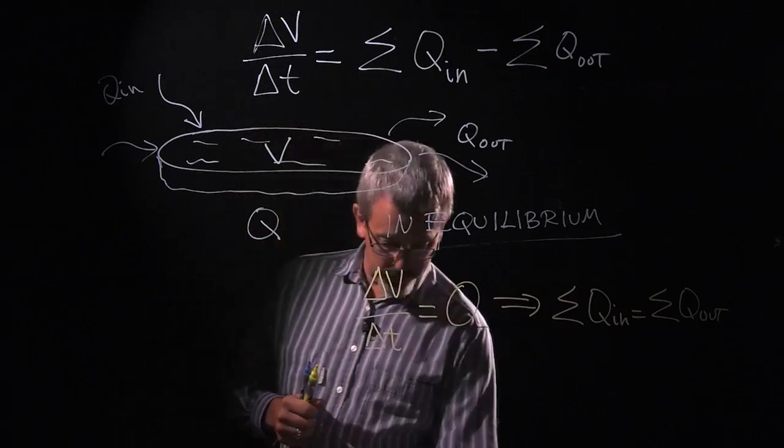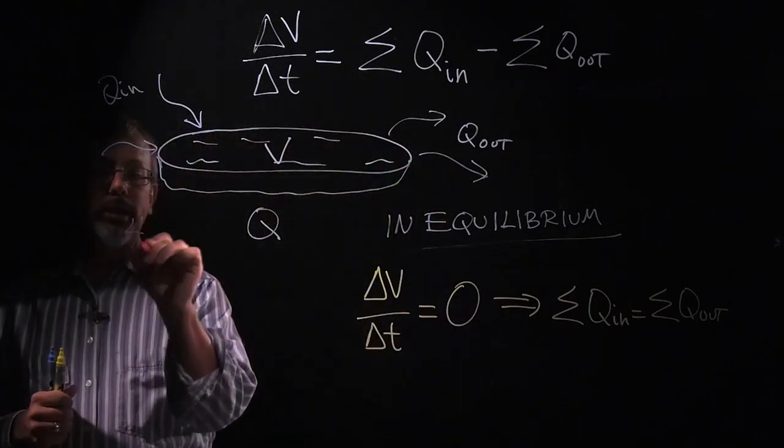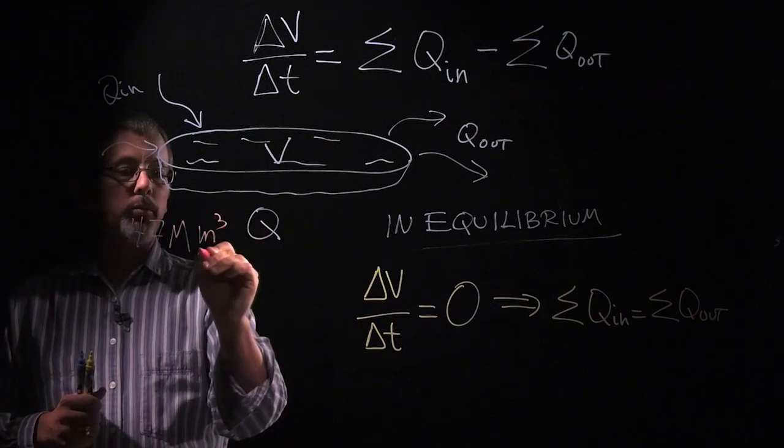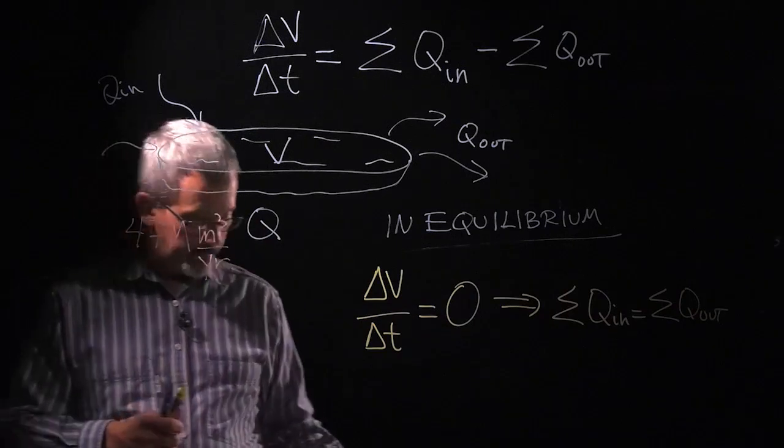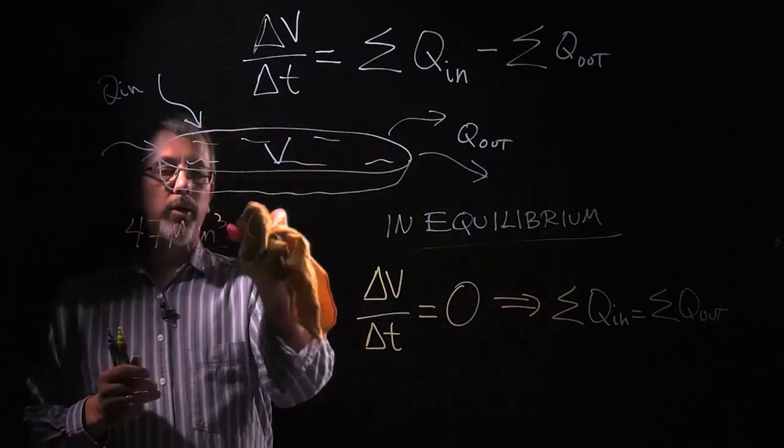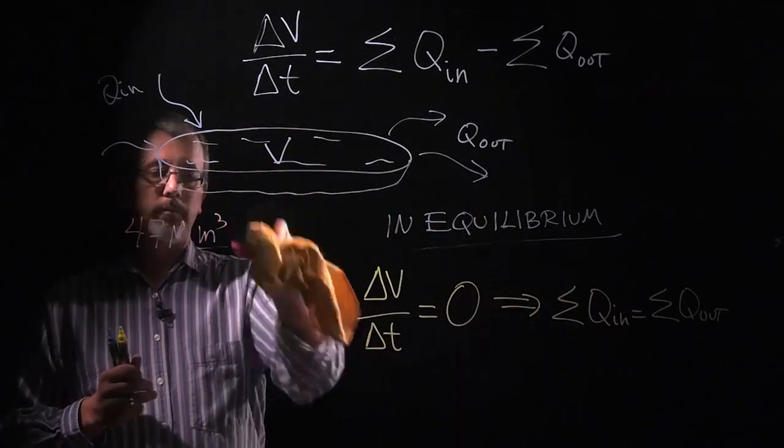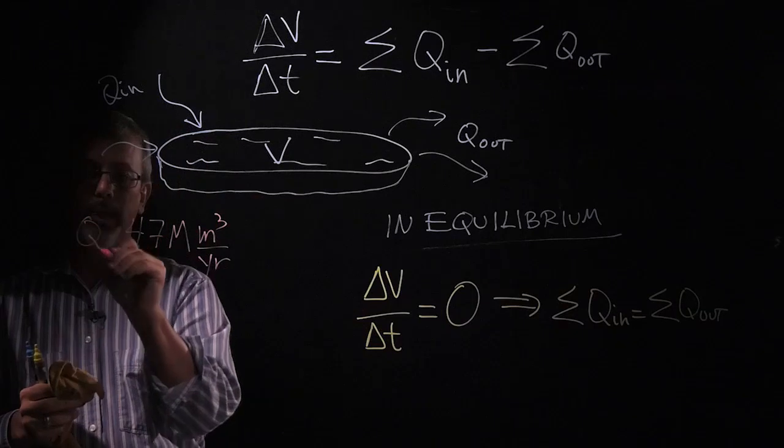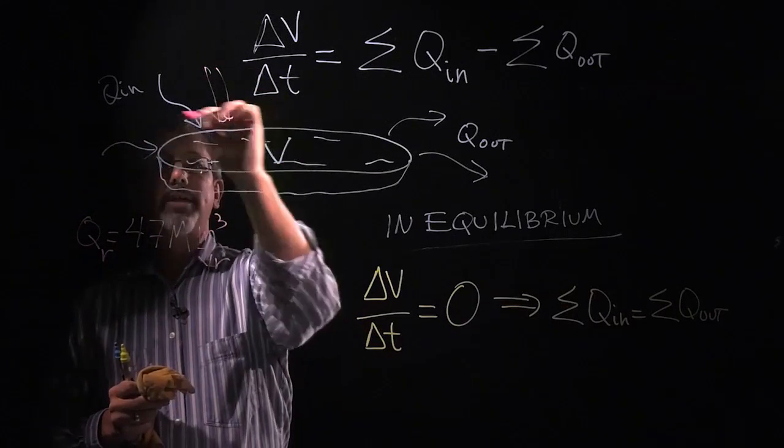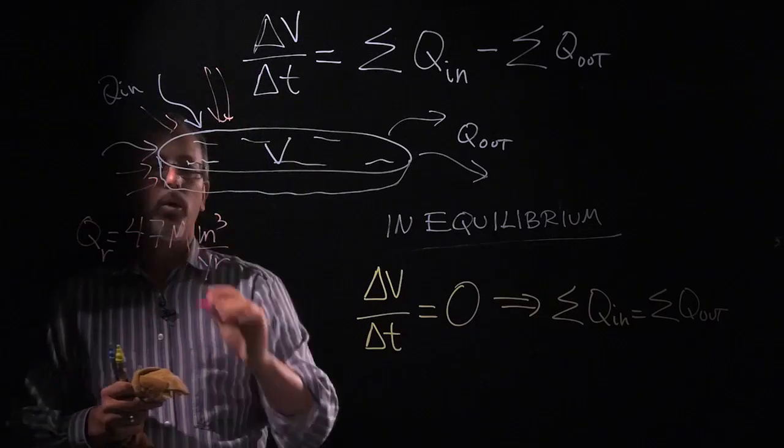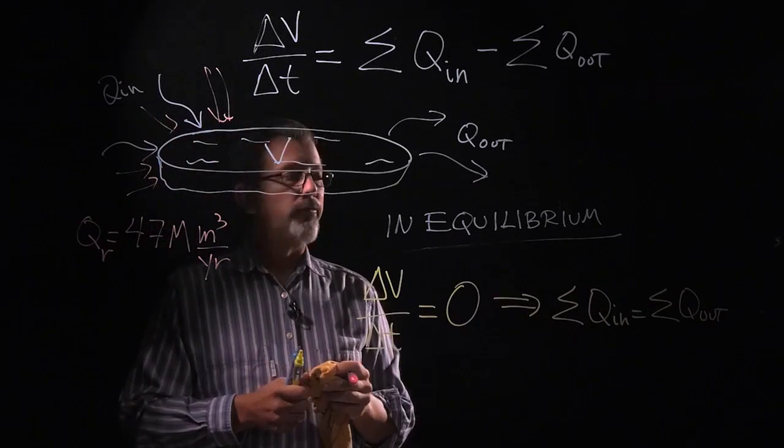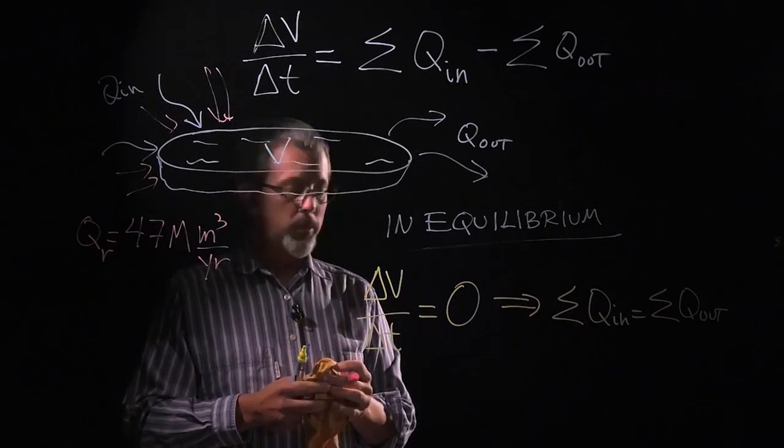Let's say, for example, that the lake receives 47 million meters cubed per year in runoff. I'll put that as QR. In other words, there's water running off the sides of the mountain, okay, or running off into the stream and it's measured at 47 million meters cubed per year.